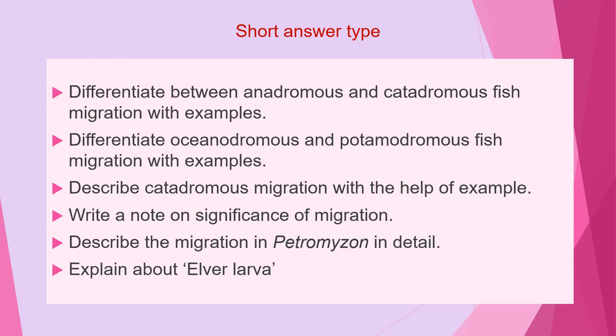Next question is: describe catadromous migration with the help of an example. Next is: write a note on the significance of migration. Next question is: describe the migration in Petromyzon in detail. And the last question of this category is: explain about the elver larva.